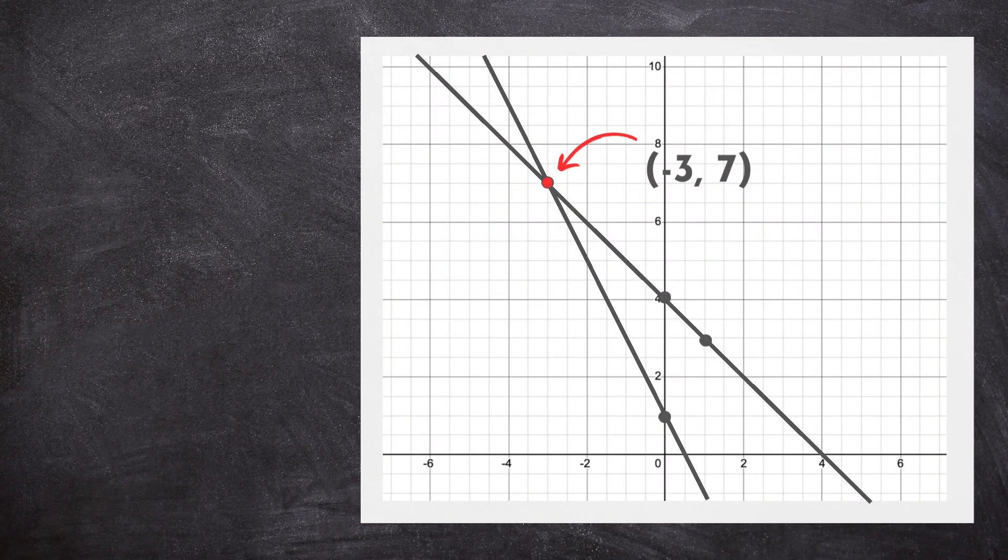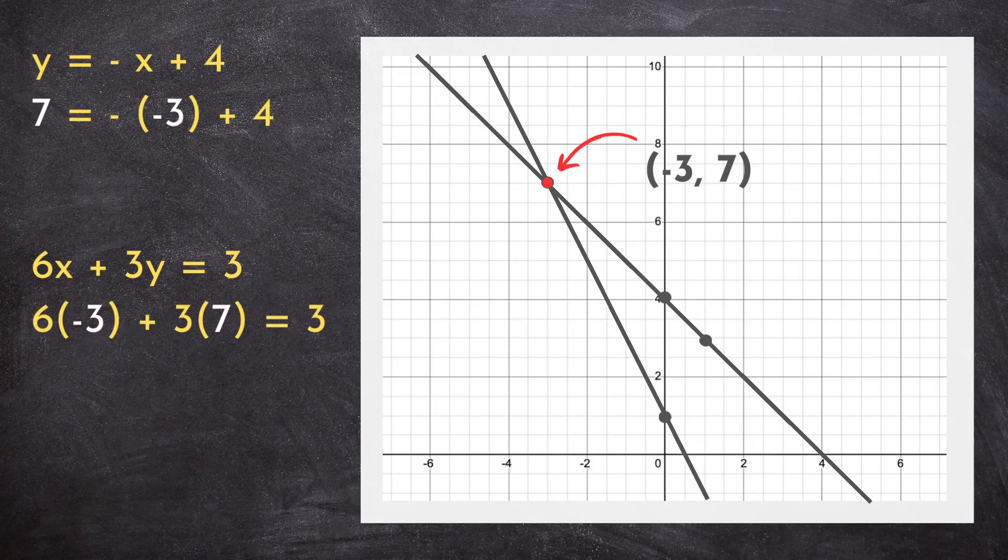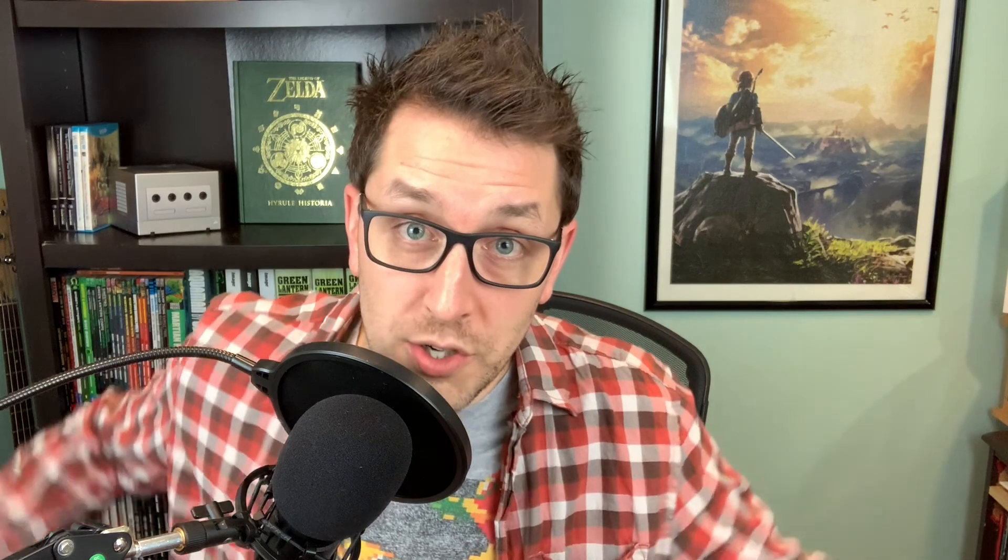Now the best part about solving a linear system this way is that you can check your answer. To do this, just take your x and y and substitute them back into the original equations, as if you haven't had enough substituting. And if you did this right, you should get two true statements. Which we do.